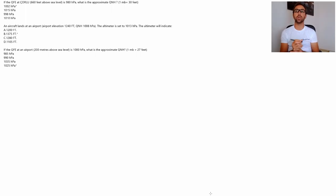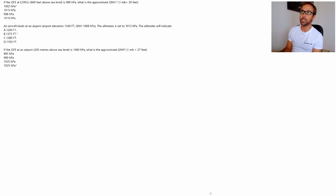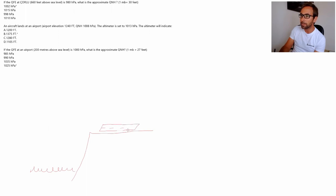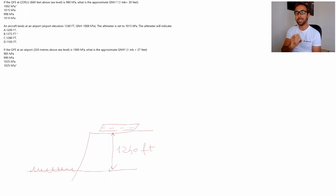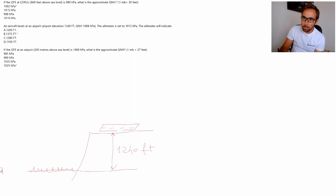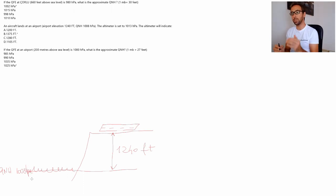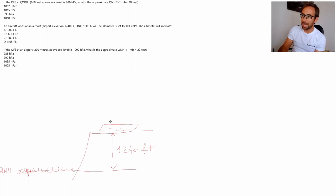Let's do the second example. The second question says: an aircraft lands at an airport with airport elevation 1240 feet and the QNH is 1008 hectopascal. So the pressure at the mean sea level is 1008, and the airport elevation is 1240 feet. The pilot has his altimeter set to 1013 as a pressure reference. The altimeter is reading the difference from the 1013 hectopascal isobar all the way up to the aircraft. But where is the 1013 hectopascal isobar?